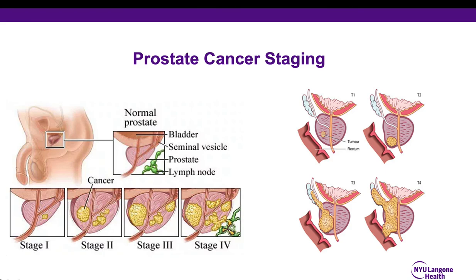Another staging system which you may hear about includes the TNM staging system. This includes what is described as the tumor, node, and metastasis staging system. In this staging system, the tumor is first staged, which goes from one to four, and then the nodes are staged, as well as the presence of metastatic disease.